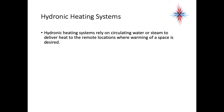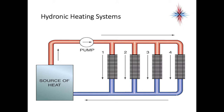Hydronic heating systems rely on circulating water or steam to deliver heat to the remote locations where warming of the space is desired. We have a source of heat, a pump, and different zones. The source of heat could be any type of boiler — gas, electric, oil, or sometimes even geothermal, but we'll talk more about that in another area of this program.